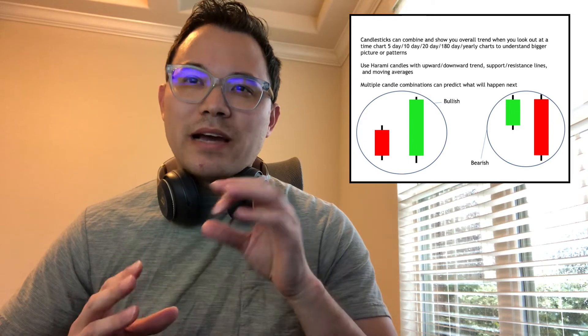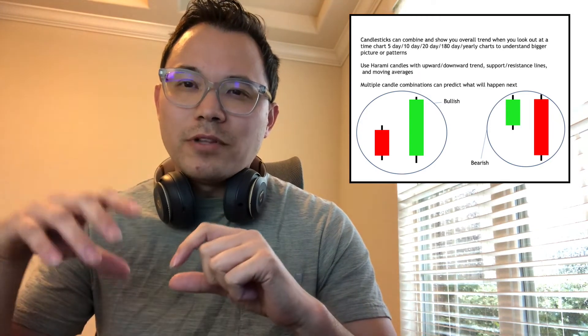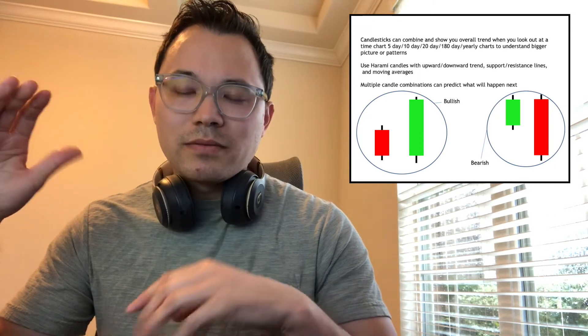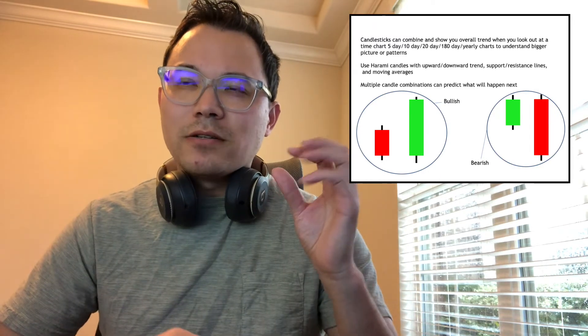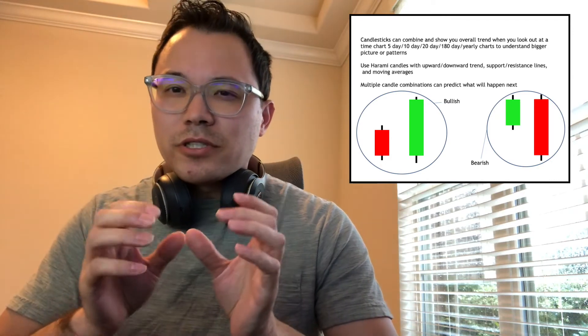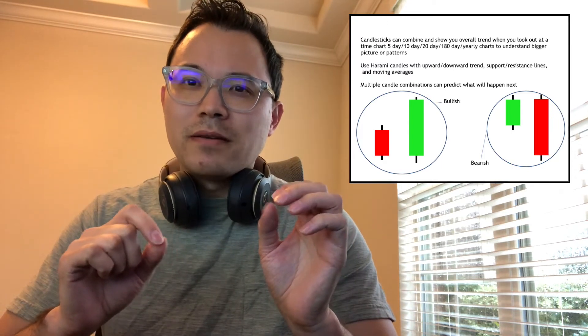There are multiple candle combinations that can predict what happens next — I'll just talk about a few since there are books covering hundreds of different harami candle patterns. On slide two, lower left-hand corner, when you have a small red candle enveloped by a second larger green candle, that represents a bullish pattern. Likewise, when you have a small green candle followed by a big red candle, that means it's a bearish pattern. You can use this in your overall strategy — if it's close to your support line and you see the big bullish pattern coming, then the next candle will probably have more buying pressure.